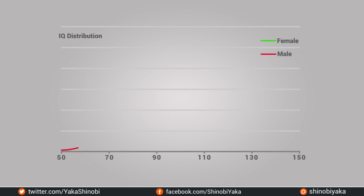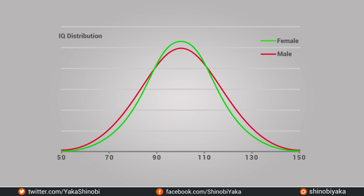When we look at this graph we can see that although the means are about equal, there are more females than males within the mean, and the male population has a wider distribution on the graph. This indicates greater variability for this trait. There are more males at the tails of the distribution. Feminists often focus on the high end of the distribution but hardly ever consider the fact that there are more males represented at the lower end of the distribution as well.